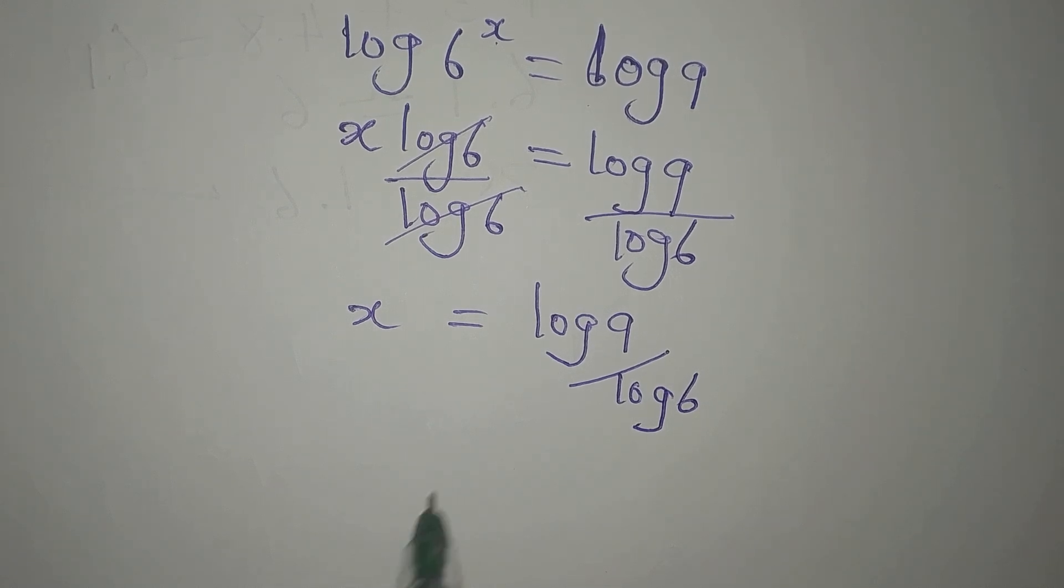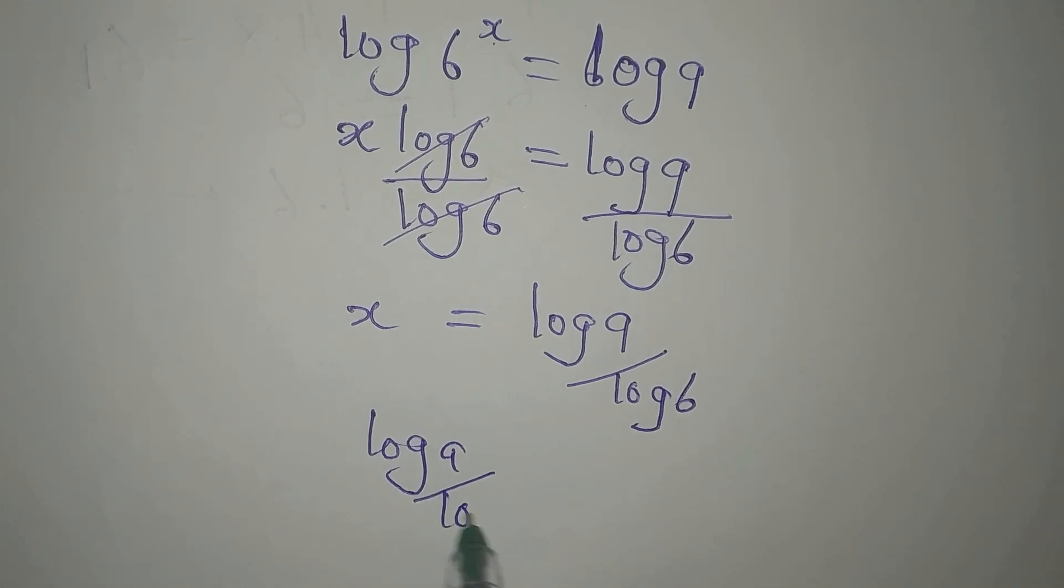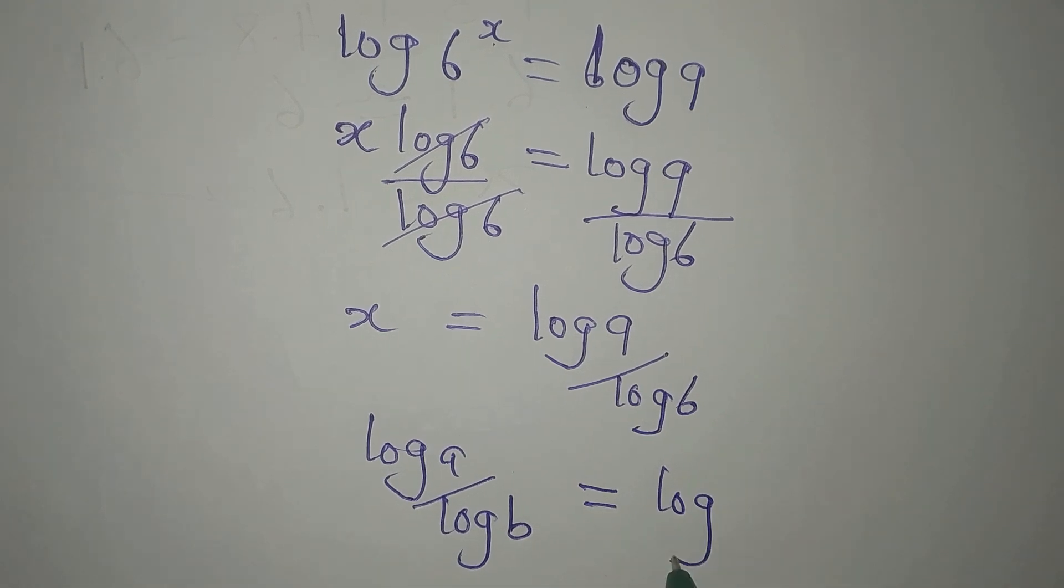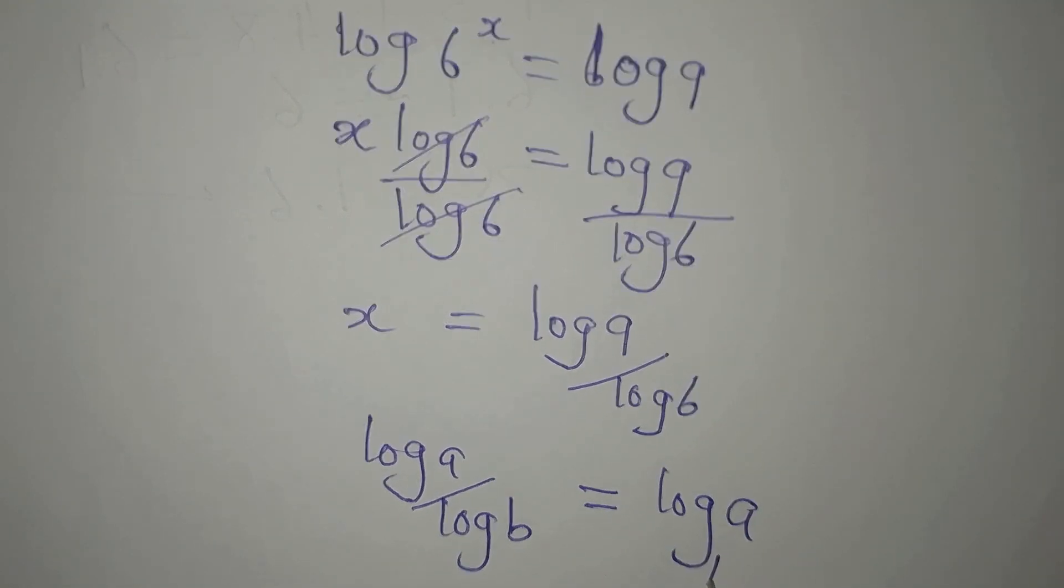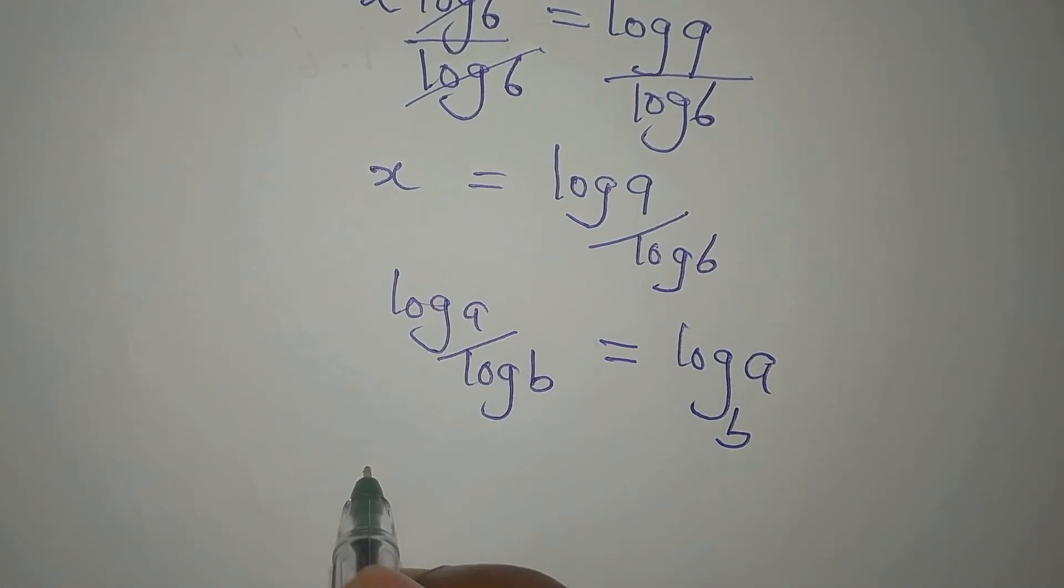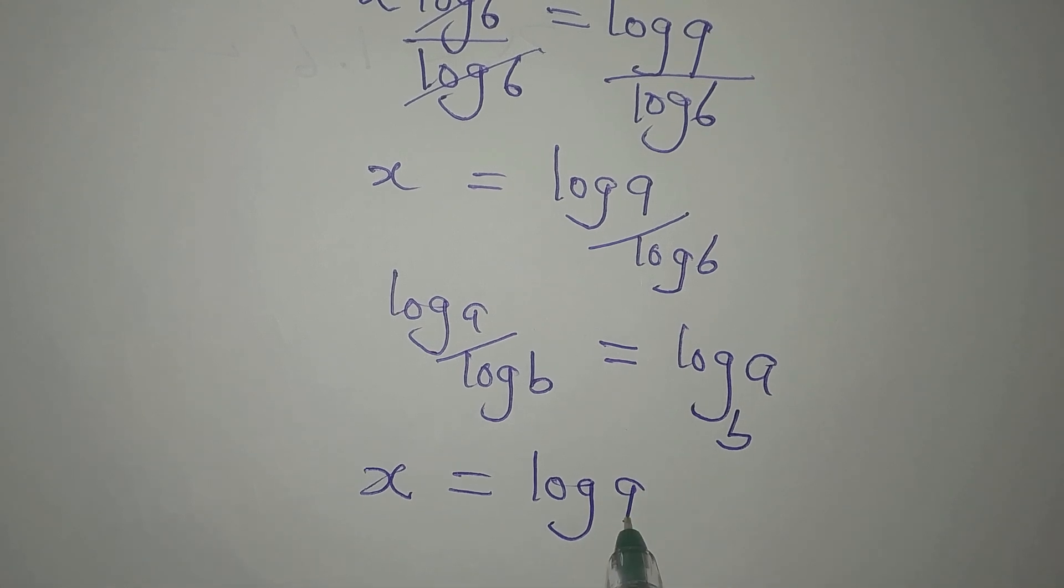Now our x is equal to log 9 divided by log 6, but then we can apply change of base because there's a law that says log a over log b is the same thing as log a to base b. So if that is the case, then our x will be log 9 to base 6.